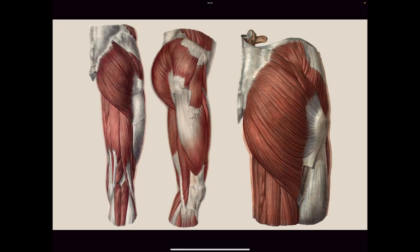When you look at the different views of the glutes, this is what I want you to remember — it looks like a donut with a hole in the middle. I break it down: this is the midpoint of the gluteus maximus, which comes down and wants to go into the leg — the gluteus maximus looks like this sliver.